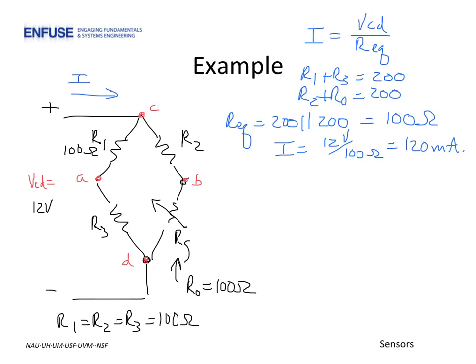This current I gets split among these two paths. The current Ia through current division is the incoming current I times the resistance in the other path, which happens to be the summation of R2 and the strain gauge, which is 200, over the resistance in both paths. When the bridge is balanced, the current through both paths is equal. So Ia and Ib are both half the incoming current, or 60 milliamps.